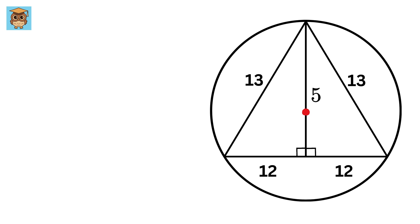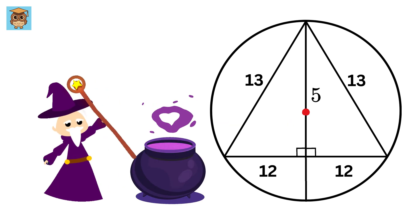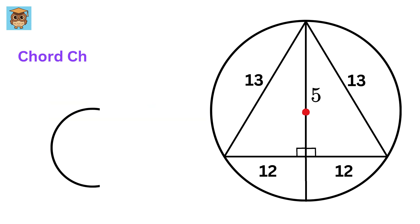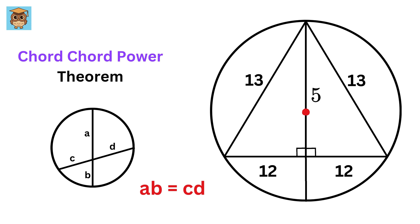Extend this line such that it becomes the diameter of this circle. Now here comes the magic—we can use the chord-chord power theorem, which states that if two chords cross each other inside a circle, the product of the lengths of the two parts of one chord is equal to the product of the lengths of the two parts of the other chord.